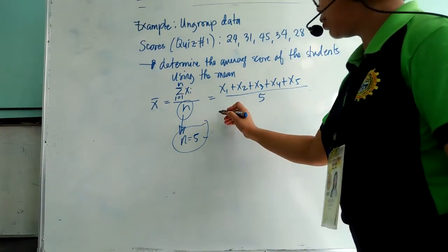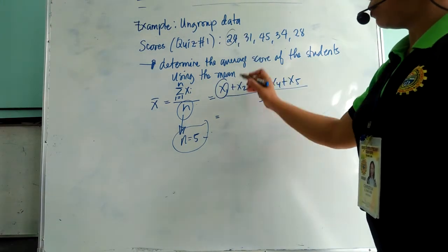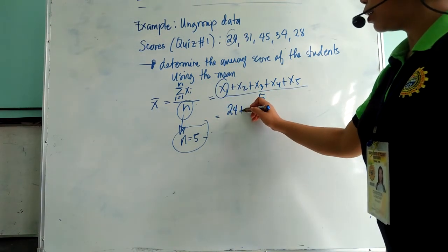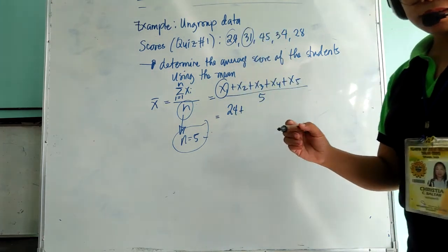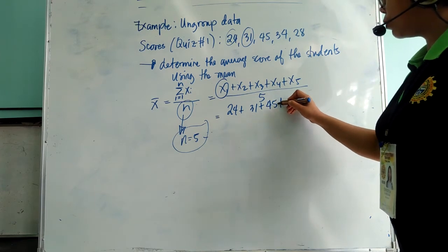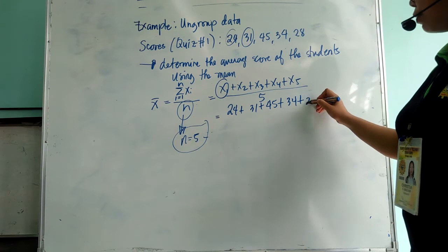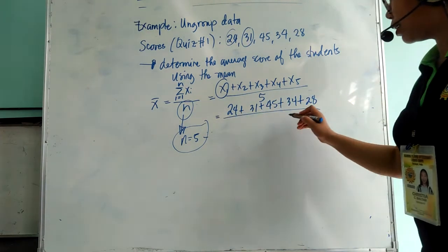So we will now calculate the sample mean. Our x of 1 is 24, x of 2 is 31, x of 3 is 45, x of 4 is 34, and x of 5 is 28. We divide it with 5.